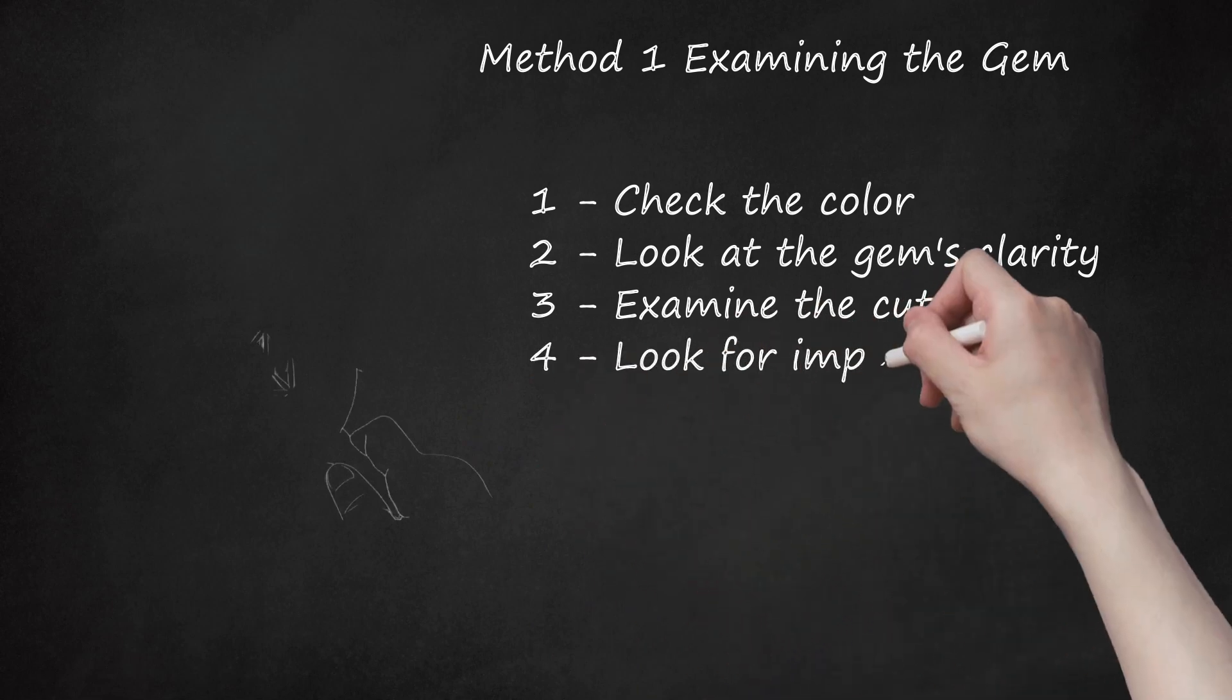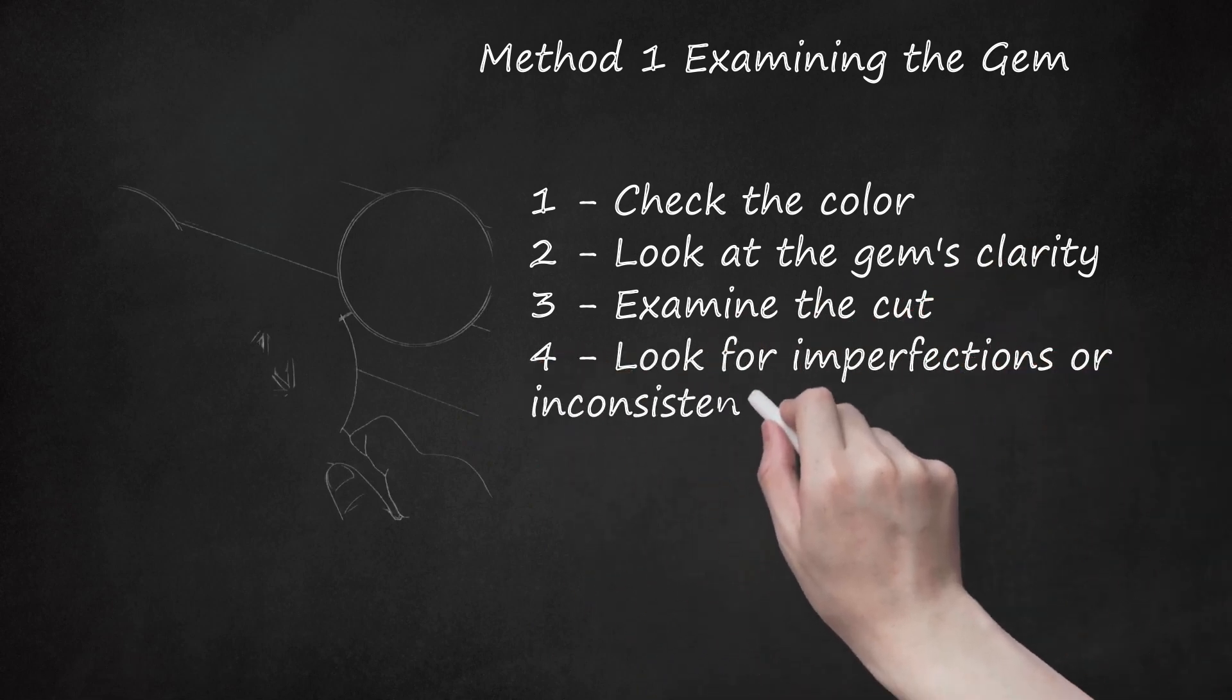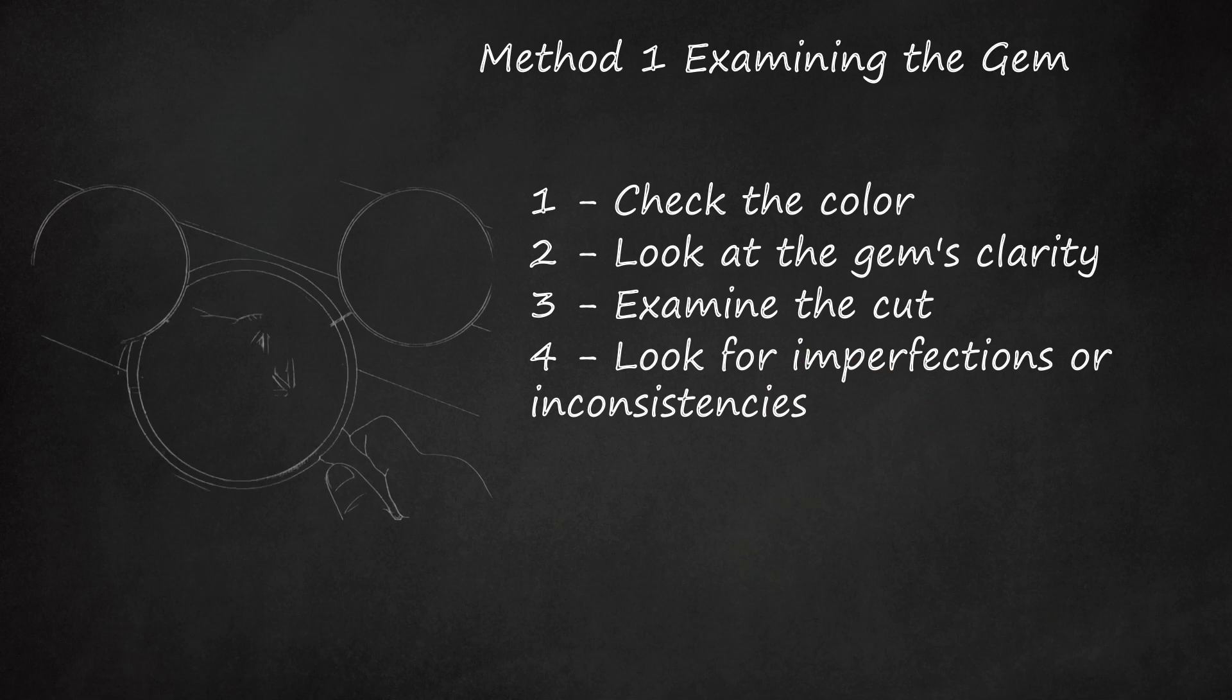4. Look for Imperfections or Inconsistencies. Authentic gems should be slightly imperfect. There should be some color zoning and the shade should have tones of white or blue in addition to purple. A gem that is one particular shade of purple throughout is likely a fake. You should also look for things like bubbles and cracks within the amethyst. A real gem will have some slight wear or tear accrued over time.